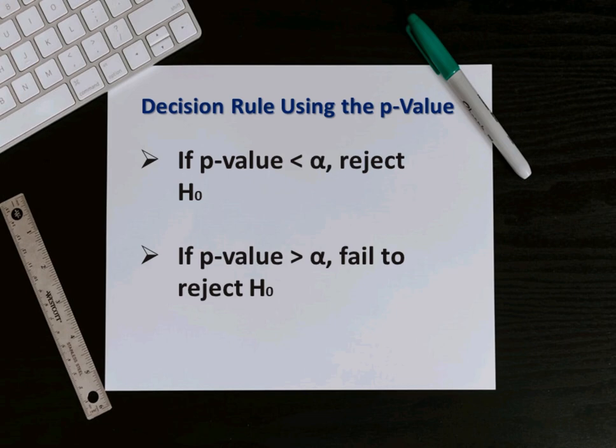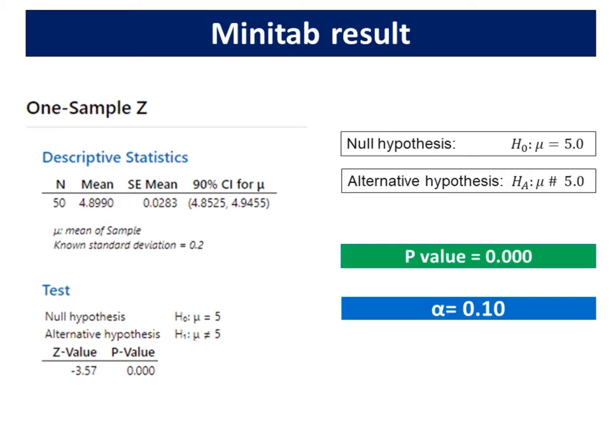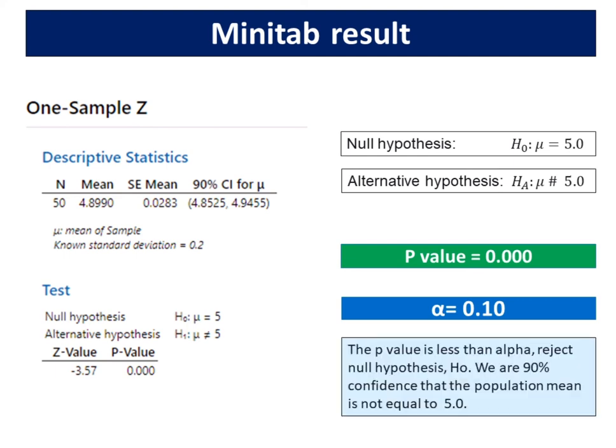The level of significance used is 0.10. The null hypothesis states that the mean equals 5. The P value is less than alpha, so we reject the null hypothesis H0. We are 90% confident that the population mean is not equal to 5.0.